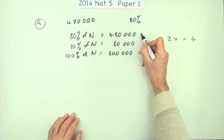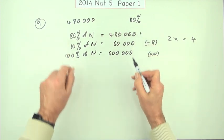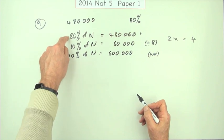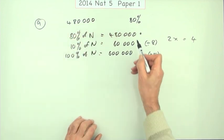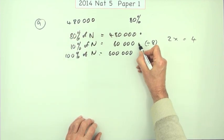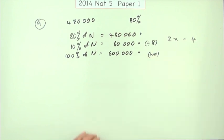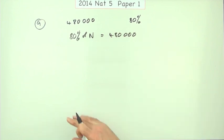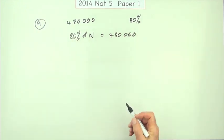That's the method given in the marking scheme. The three marks were: one for making the initial statement that 80% of the original number is 480,000, one for finding 10%, and one for multiplying up to 100%.